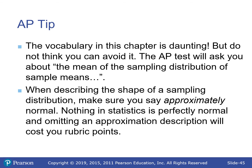The vocabulary in this chapter is tough because we have sampling distributions and distributions of samples. On the AP test, you'll be asked about the mean of the sampling distribution of sample means — which is μ. When describing the shape of a sampling distribution, always say approximately normal. That 'approximately' is a key word.